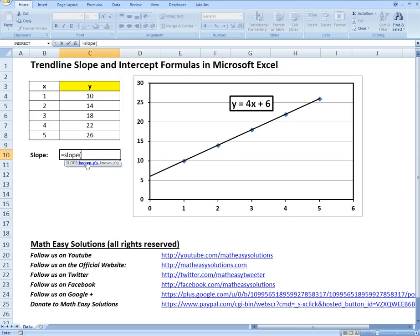So that's a formula, and all you do is put the known y's, this is this table, and comma, known x's, and it gives you the exact same calculation that this trendline automatically does, and that's 4, there's a 4 right there. And if you go now the intercept.